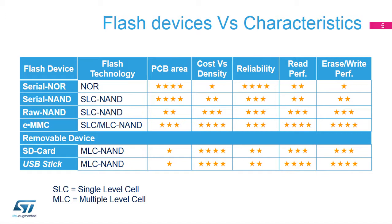eMMC devices are widely used in the mobile phone market and so offer very good price and performance. eMMC memories embed error correction as well as fully automatic bad block management and wear leveling. Removable devices such as SD card or USB stick provide very good cost at large density, but at the expense of lower flexibility and reliability due to user access and mechanical constraints.